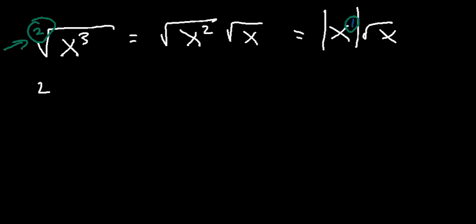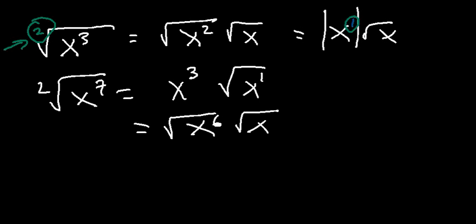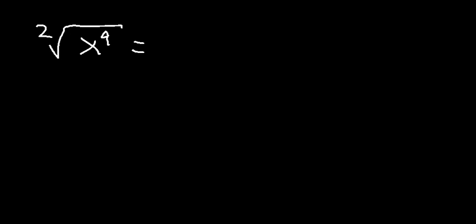For the square root of x to the seventh: how many times does 2 go into 7? It goes 3 times with 1 remaining, so the answer is x cubed root x. Alternatively, separate it as the square root of x to the sixth times the square root of x. 6 divided by 2 gives x cubed, times root x. For the square root of x to the 9: 2 goes into 9 four times with 1 remaining, giving x to the fourth root x.